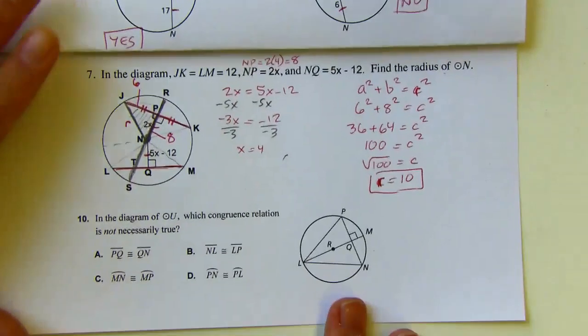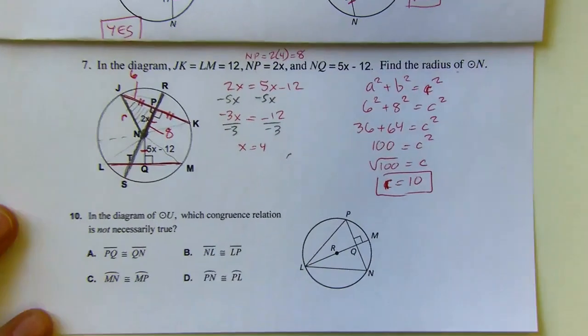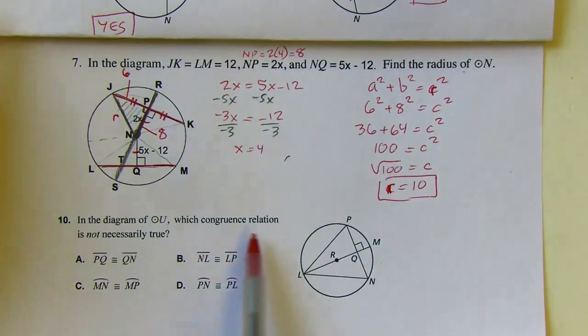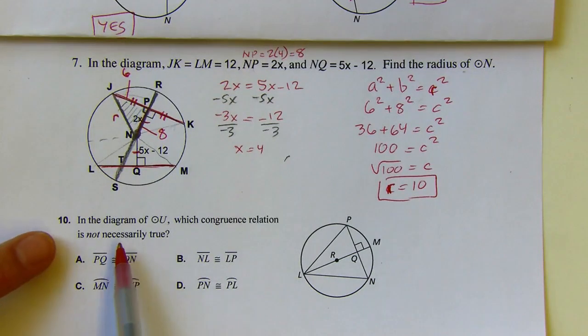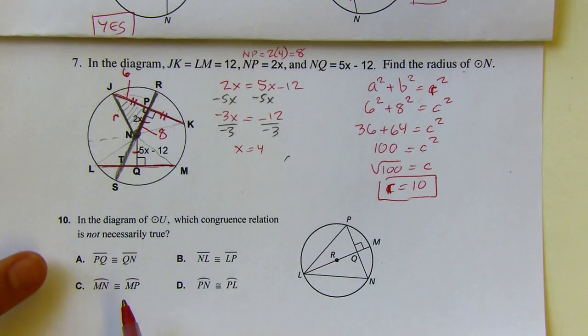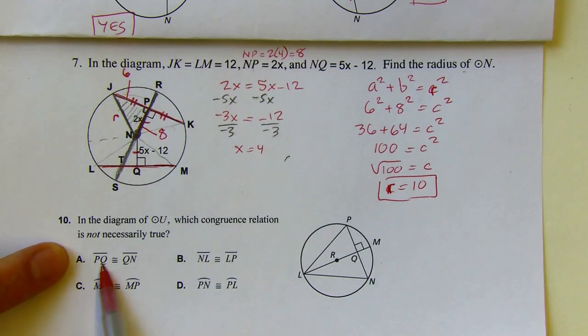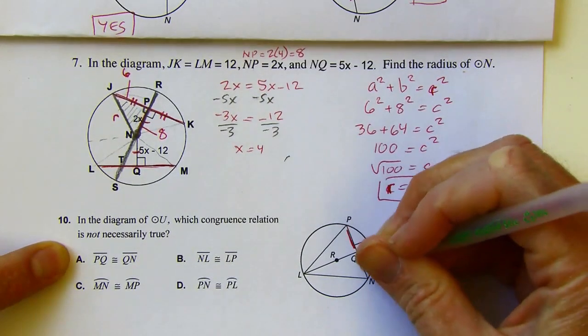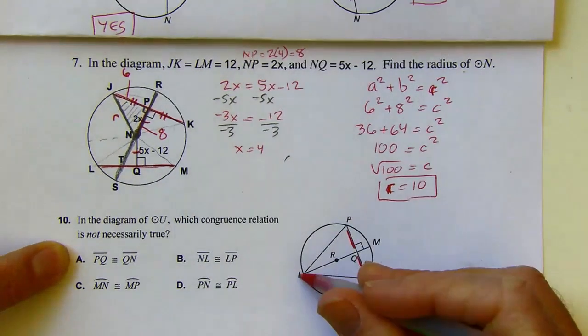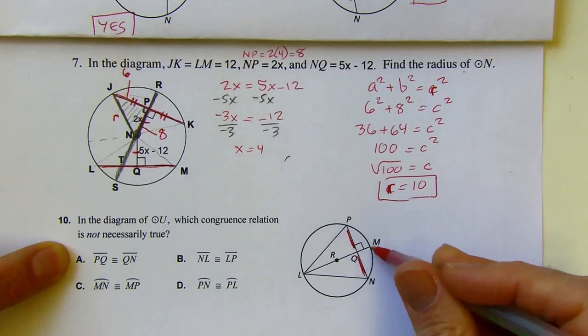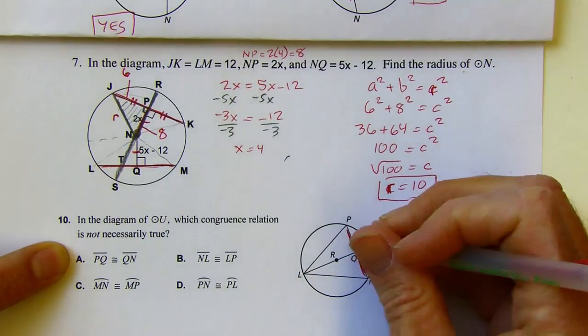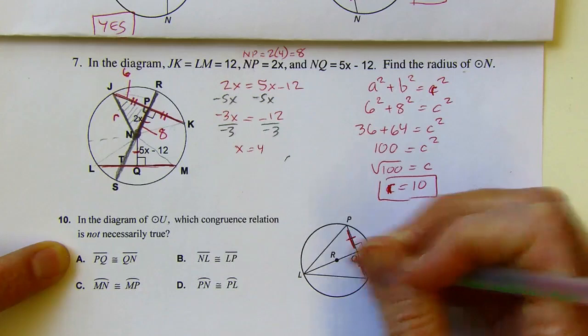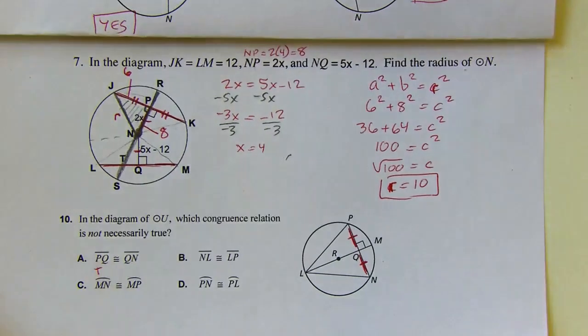Alright, and then the last problem. This one is a multiple choice, and it asks which of these congruence relations is not necessarily true. So what I'm going to do is go through them one by one and just check if I know that they're true or not based on the given info. So first it says PQ is congruent to QN. So PQ is right here. QN is here. Those are going to be congruent because I've got a diameter that's perpendicular to them. So that diameter is going to bisect them. So this is definitely true. I'm just going to put a little T there to remind myself that one's true.